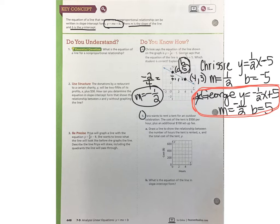Now let's try question 5. Farrah wants to rent a tent for an outdoor celebration. The cost of the tent is $500 per hour plus an additional $100 setup fee. Part A: Draw a line to show the relationship between the number of hours the tent is rented, x, and the total cost of the tent, which is y.